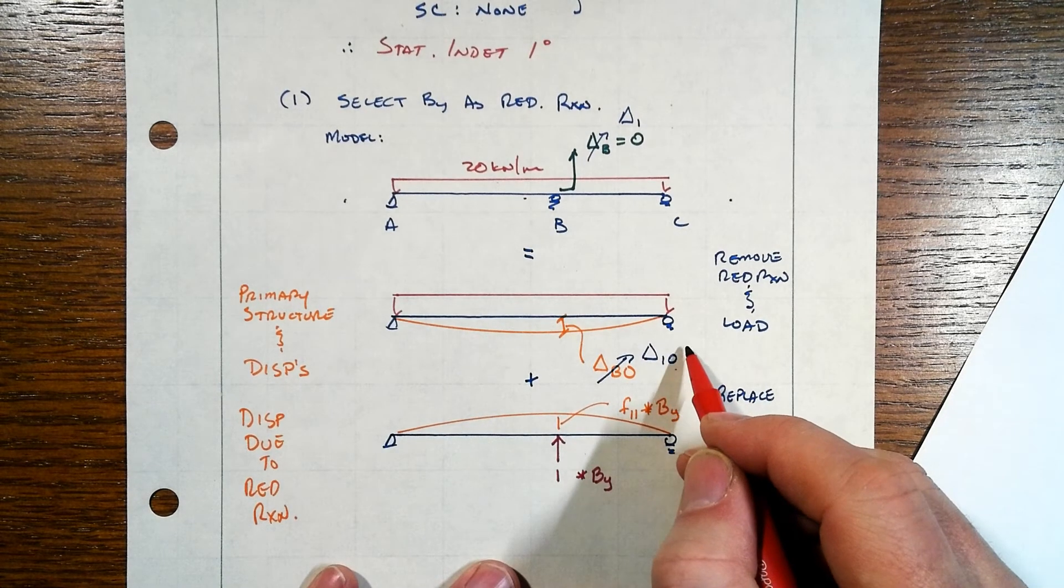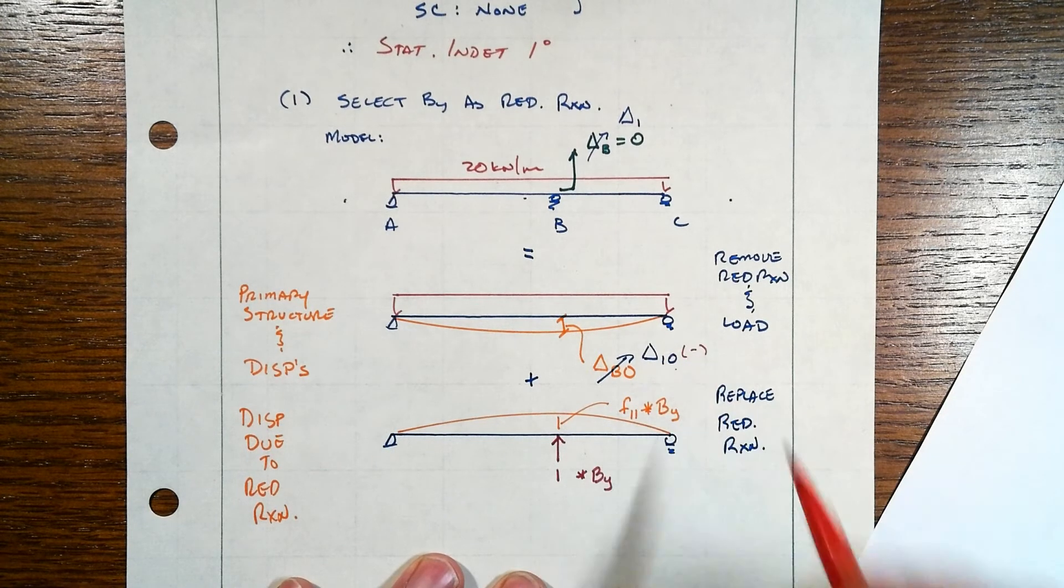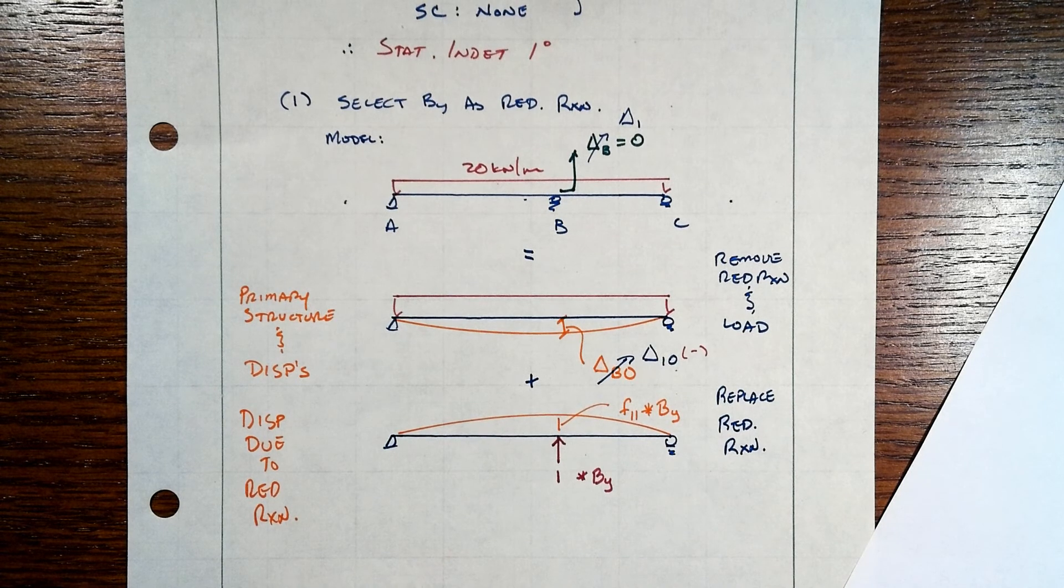And so delta one zero would say we don't have any redundant reaction that is there. Now, because of what I showed up here above, and that's the positive direction, in reality, delta one zero will be a negative value when we finally get done with this.